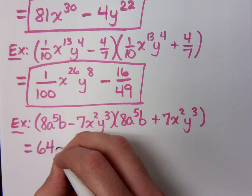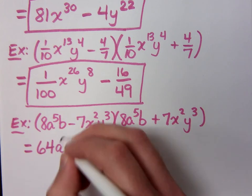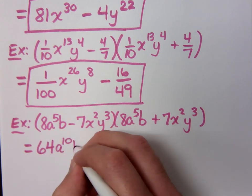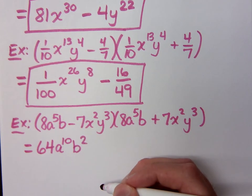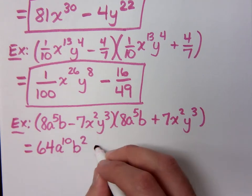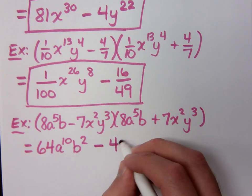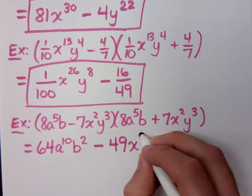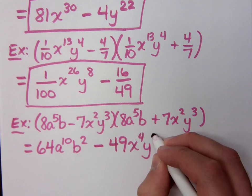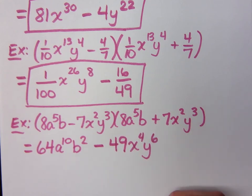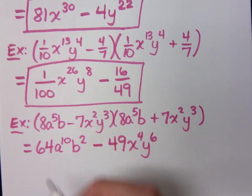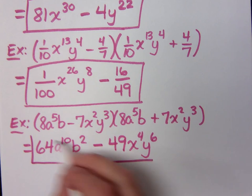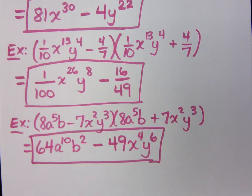64 a to the 10th b to the 2nd. Finish. Cancel it out, right? Minus 49 x to the 4th y to the 6th. Because how many factors of y would be in that product? 6. 3 and 3 is 6.